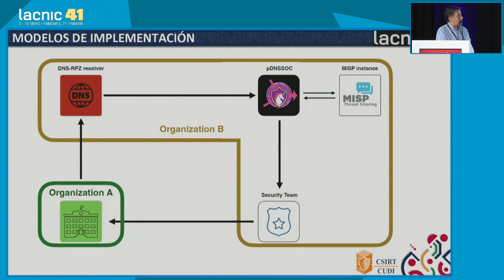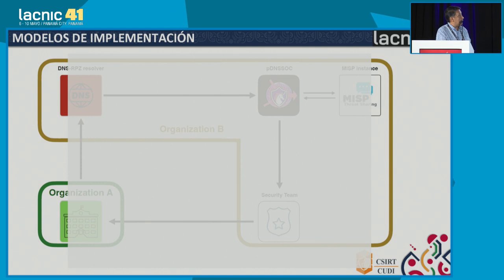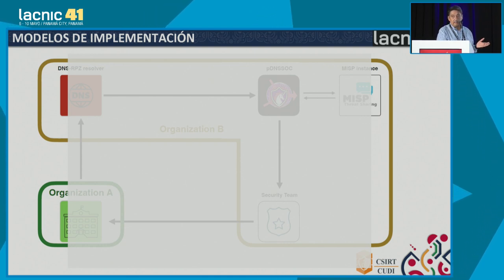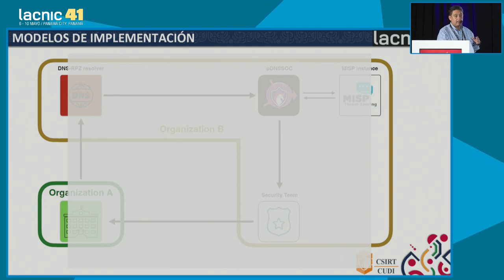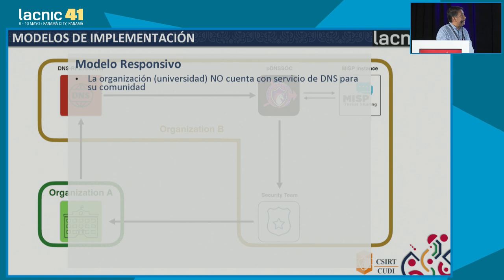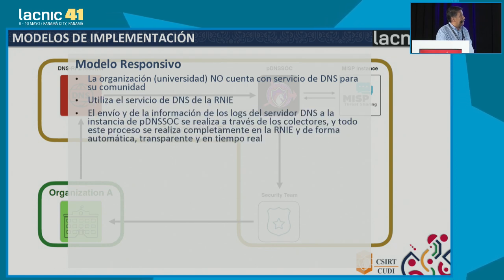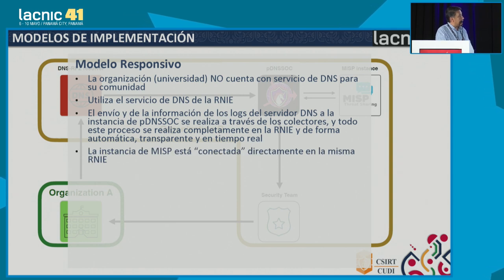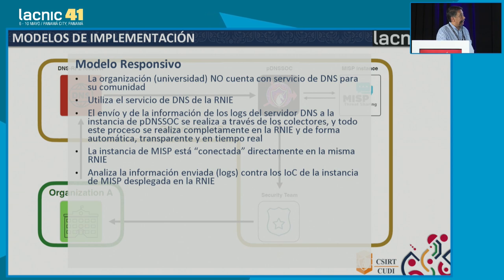There is a second model — a responsive model — whereby the organization does not have a DNS server or does not wish to use it, and prefers to use the national network. In this model, they use the DNS server of the national network in Mexico. We are in charge of forwarding the logs because they are in our infrastructure. We conduct the analysis, and if we detect indicators of compromise, we generate an alert in our device and also to the university. Data collection is done through these collectors and the entire process is carried out in the national network.